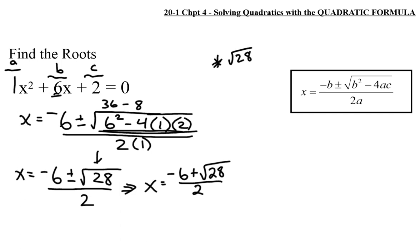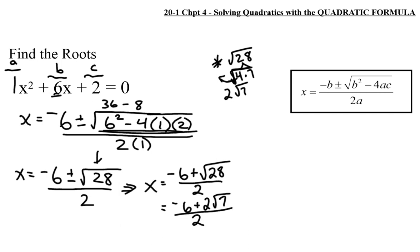We want to put the square root of 28 into mixed radical form. We can break 28 into two factors: 4 times 7. The 4 is useful because it can be rooted out — square root of 4 times 7 means the 4 roots out to become 2, leaving root 7. So this is better written as negative 6 plus 2 root 7, over 2.